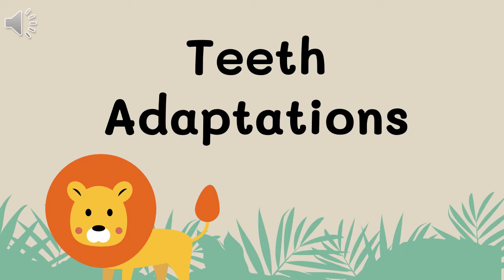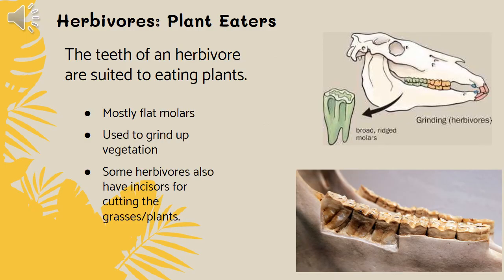In this section we're going to talk about different types of teeth adaptations. By looking at the type of teeth an animal has, we can tell what types of food the animal would generally be eating. The teeth of an herbivore, or plant eater, are suited to eating plants — mostly flat molars used to grind up vegetation. Some herbivores also have incisors in the front for cutting off grasses or plants.